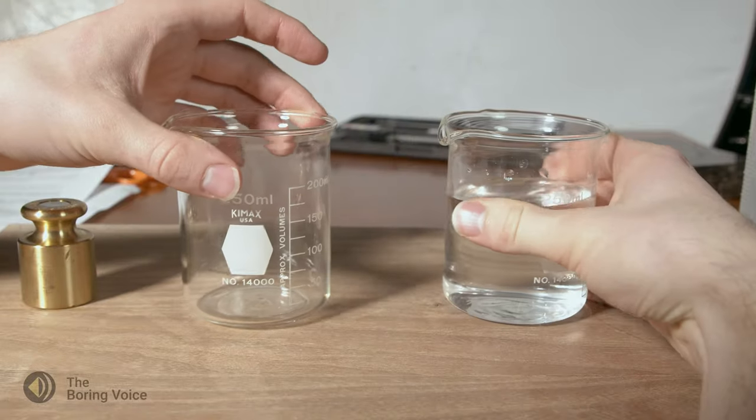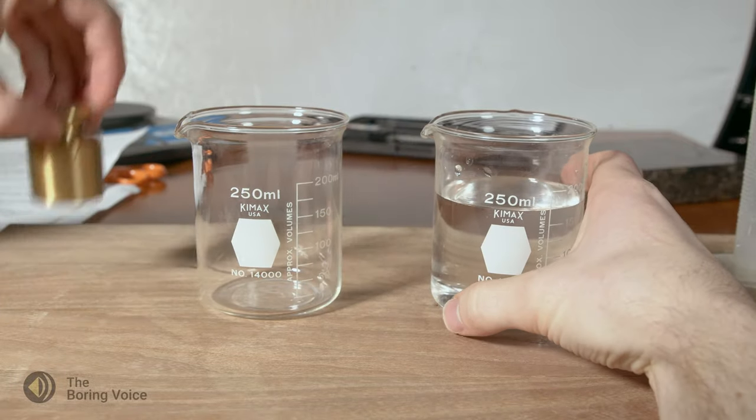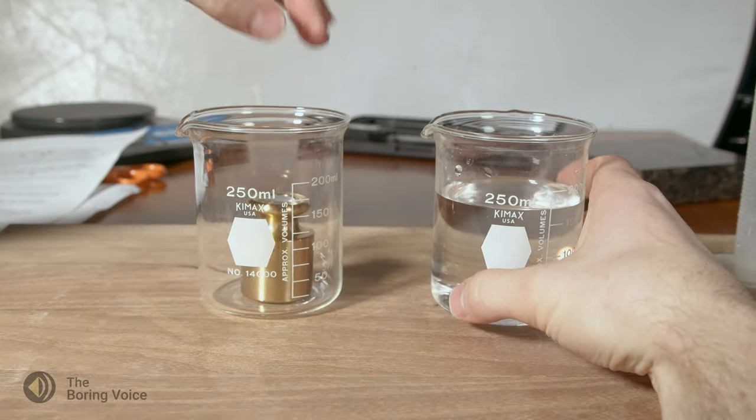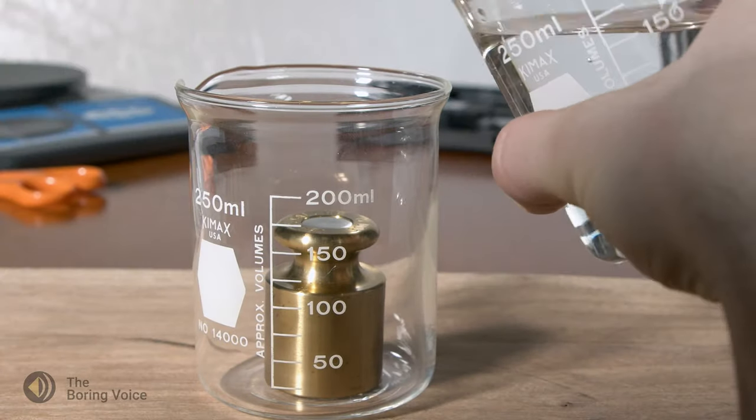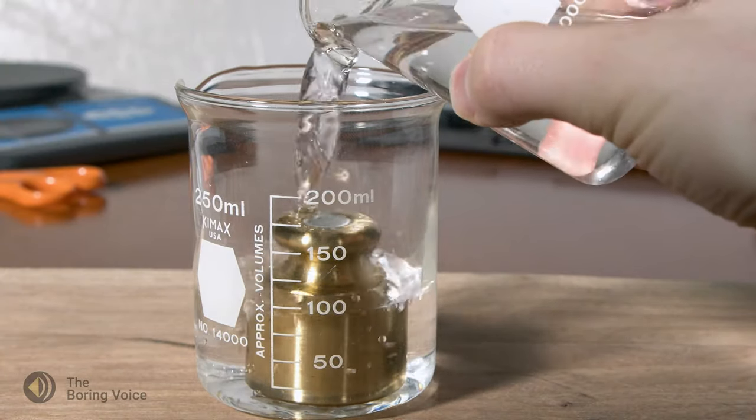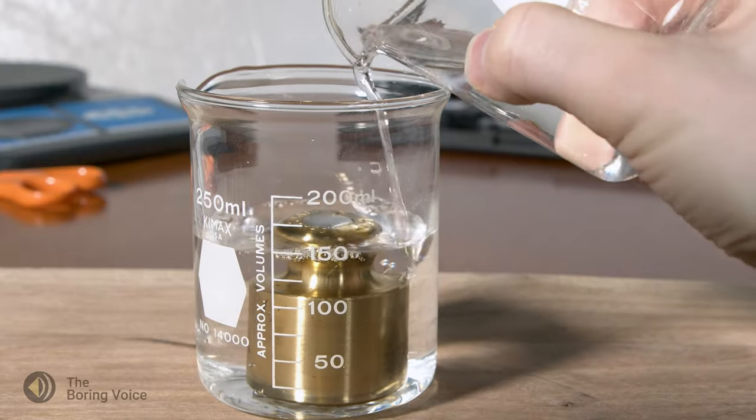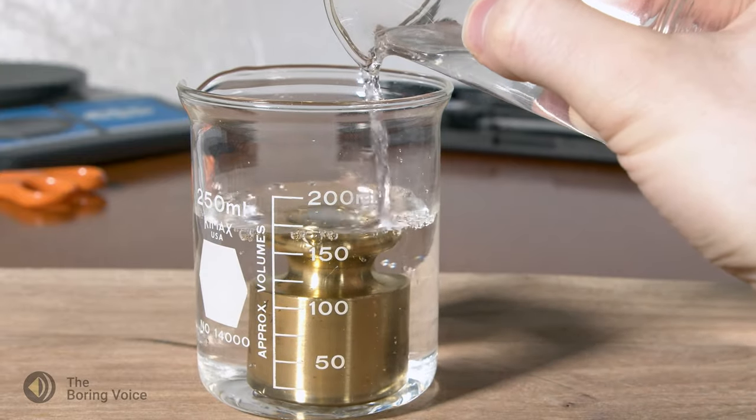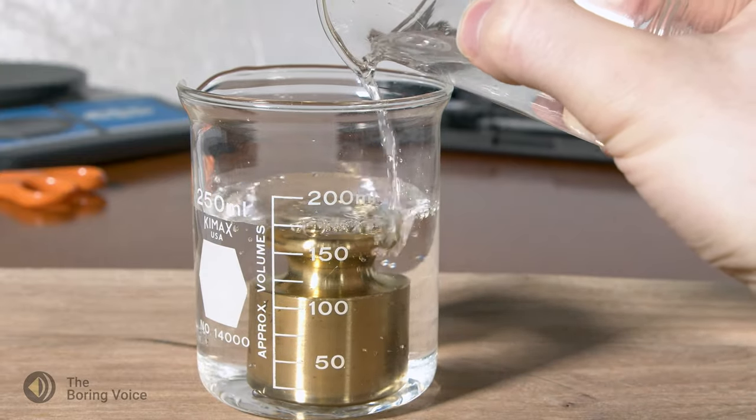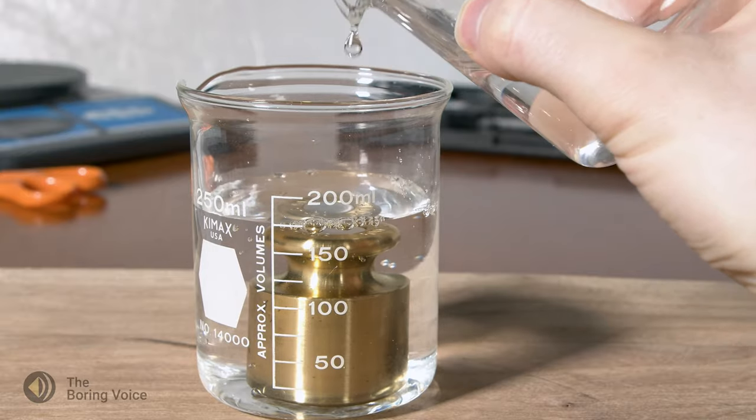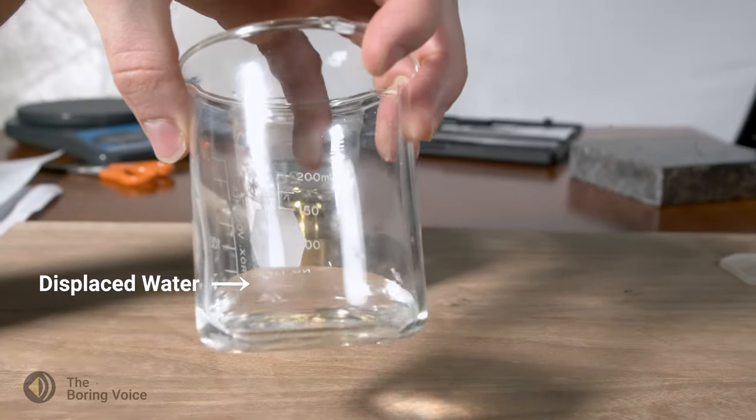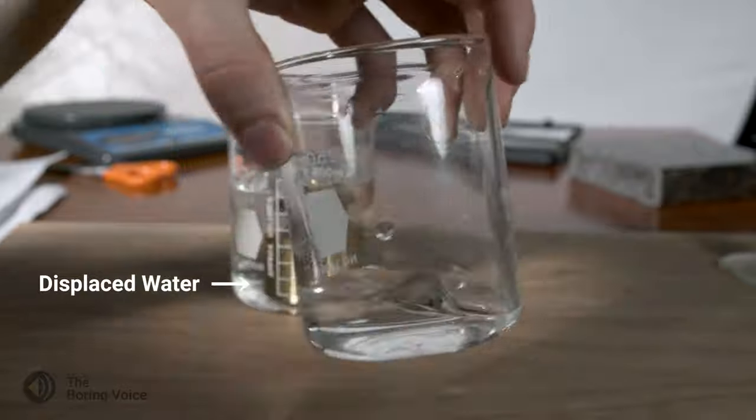Here I have a beaker of 175 milliliters of water. I am going to place the object into a second identical beaker. Next, I am going to pour the water into the second beaker until I measure 175 milliliters. When doing this test yourself, be sure to choose an amount of water that will cover the object.